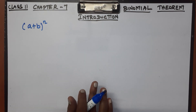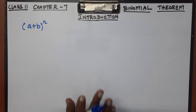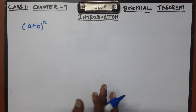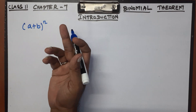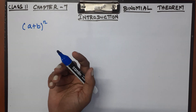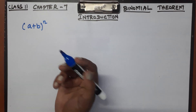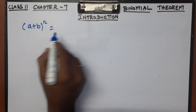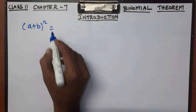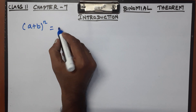For power 4, power 5, power 6, and beyond, we need a general method. This is what the Binomial Theorem gives us — a formula to expand (a + b) to any power n.